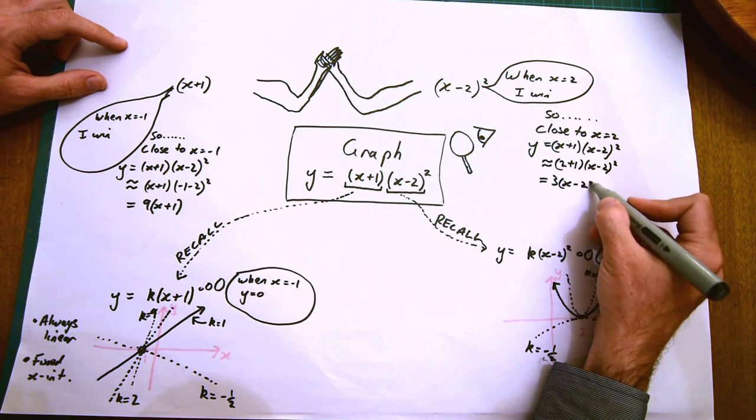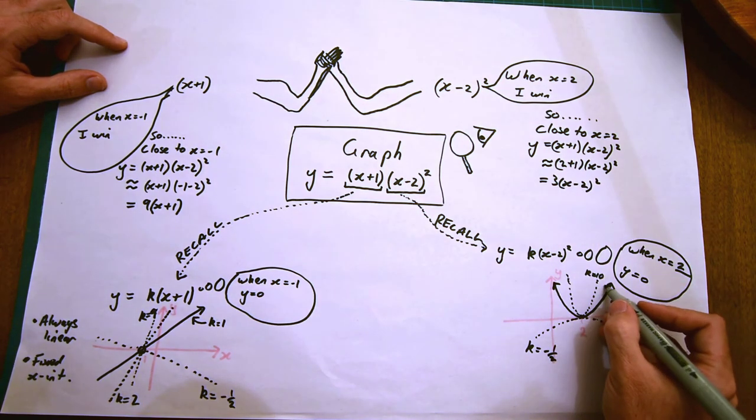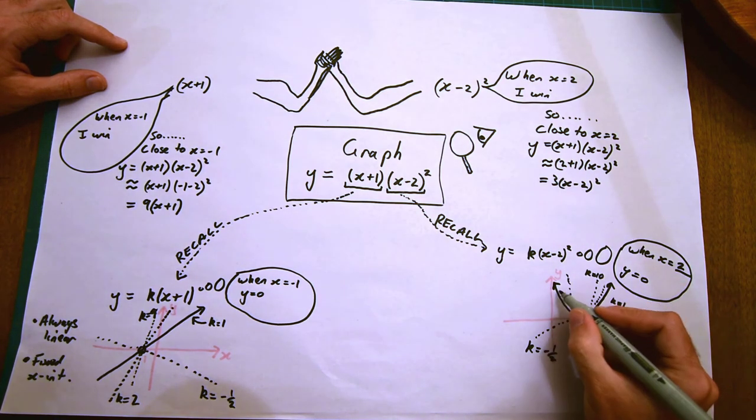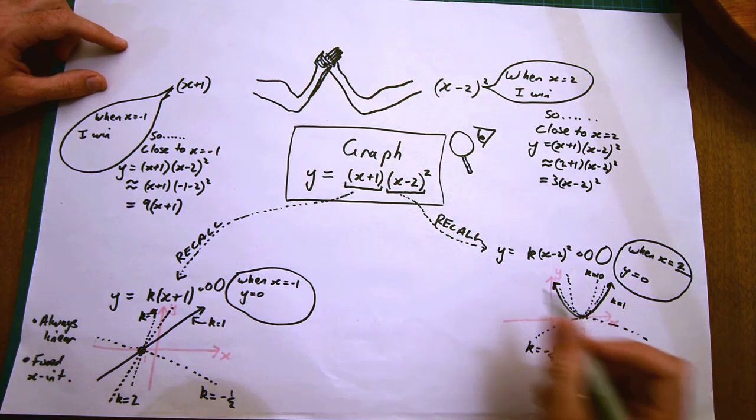This gives us a rough idea of the approximate shape of the curve. It should look something like y equals 3 times x take 2 all squared.